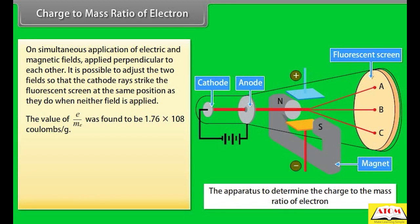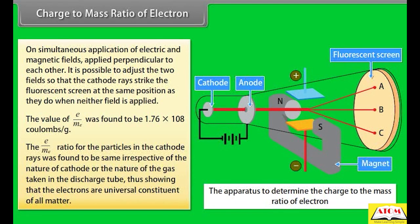The e/m ratio for the particles in the cathode rays was found to be the same irrespective of the nature of the cathode or the nature of the gas taken in the discharge tube, thus showing that electrons are a universal constituent of all matter.